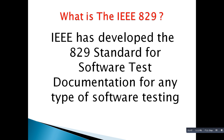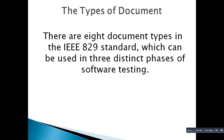This standard has been widely accepted in the community. It's the IEEE 829 standard for software test documentation, and it applies to any type of software testing. There are 8 document types in the standard that are used in three distinct phases of software testing.